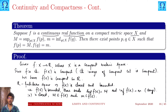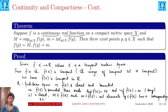The supremum is M and the infimum is m. Now we use the fact that f(X) is closed. Since f(X) is closed, the supremum and infimum must be members of f(X). So M is a member of f(X) and m is also a member of f(X).